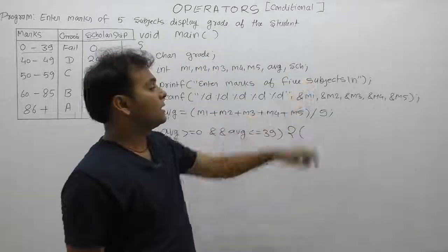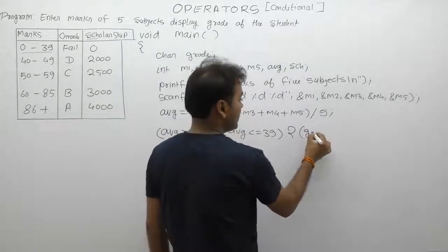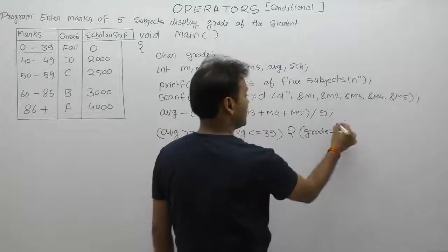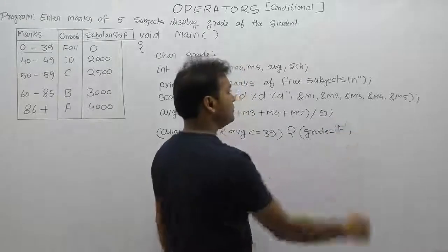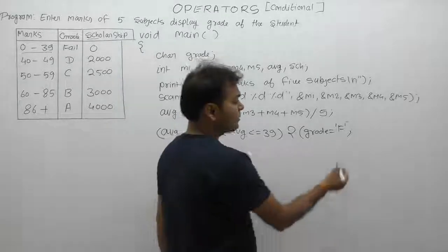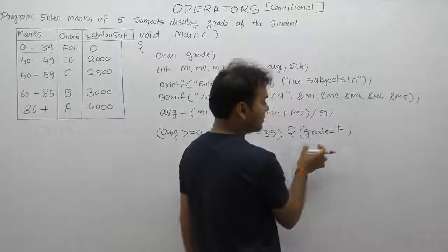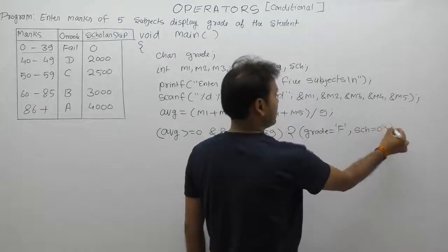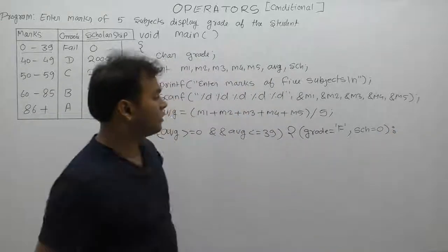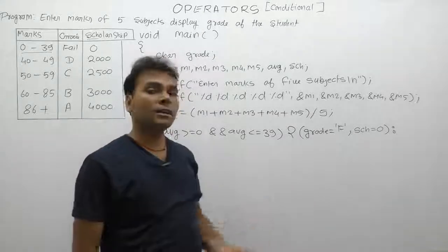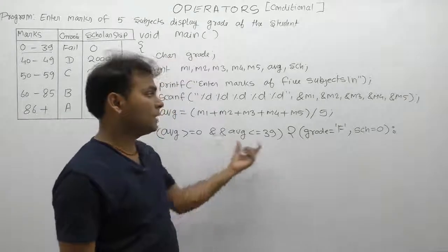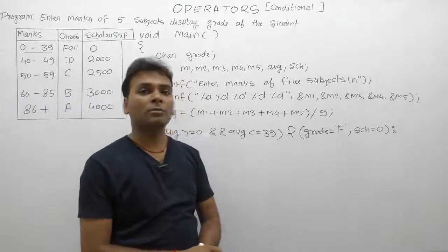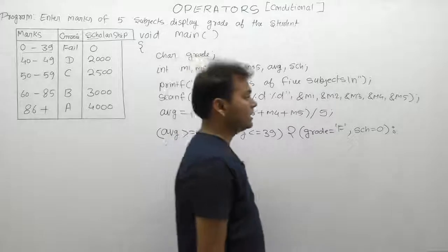We assign both grade and scholarship. What is the value of grade in that case? Grade is F. We are doing grade equals F inside brackets - the bracket is just controlling priority. Then scholarship, sch equals to 0. Now, as we know, in the case of ternary operator, we must provide exactly three operands. But currently, how many operands do we have available? Only two - condition and true section. We don't have any false section. Therefore, just for completion of this operator syntax, we can provide any number, just for completion of the three operands requirement.